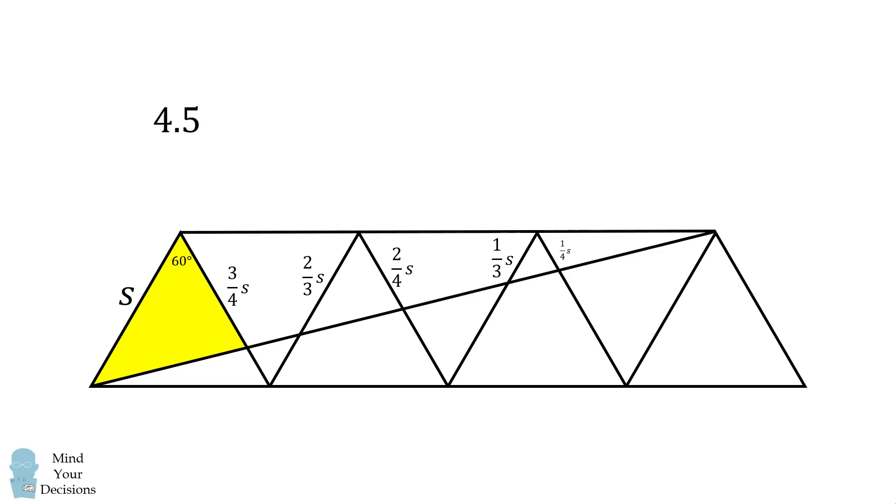From here, the similarity factor between the largest and the next largest triangle is 2 over 3. So, the areas will be in the square of that. So, we have 4.5 multiplied by 2 over 3 squared. The smallest triangle has a similarity ratio of 1 over 3, so its area will be the square of 1 over 3 multiplied by 4.5.